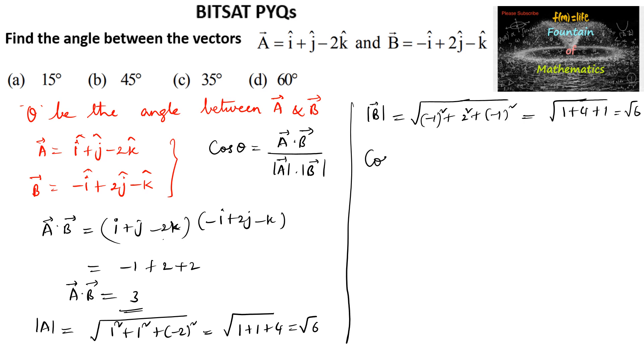We can write cos theta is equal to a dot b that is 3 upon root 6 into root 6 which is 3 upon 6 is equal to 1 by 2. So cos theta is 1 by 2 then theta is equal to cos 60 degrees that is pi by 3. So theta is equal to pi by 3 or we can say angle between the two vectors is 60 degrees. So we can go with option d.